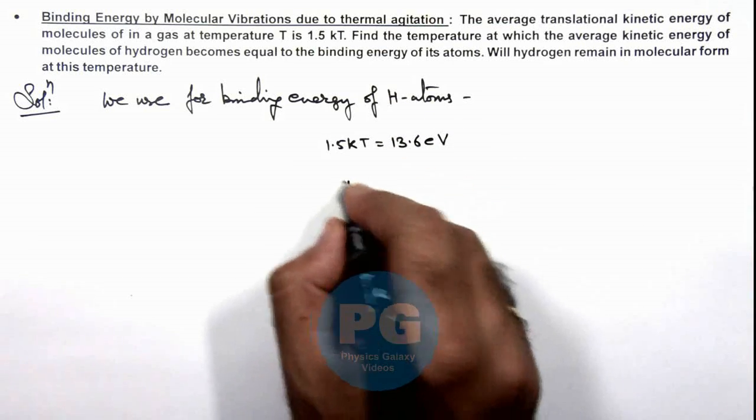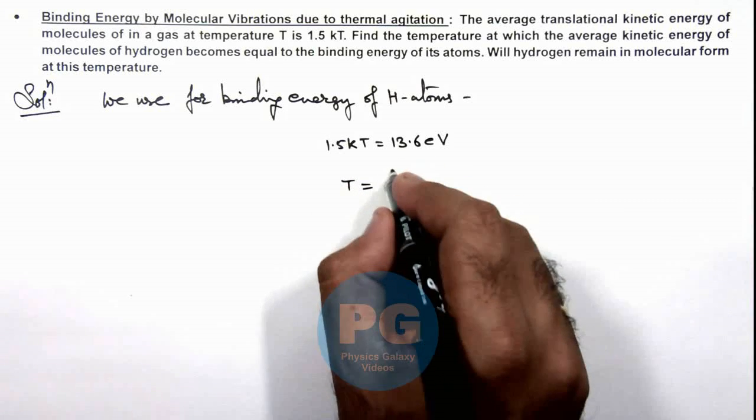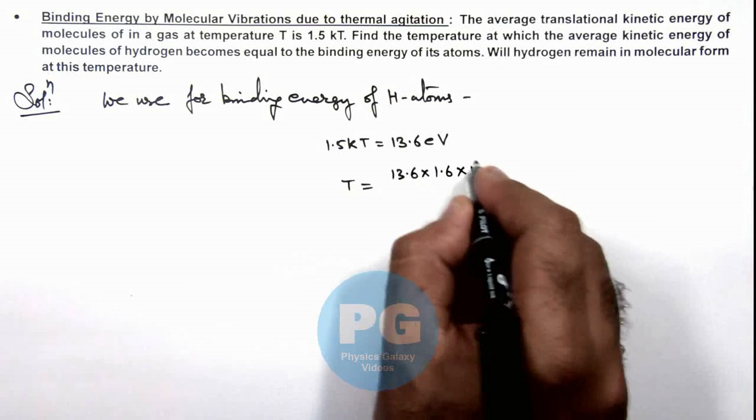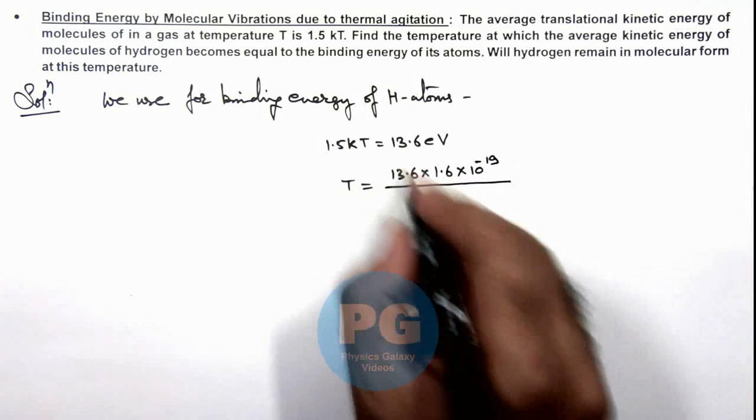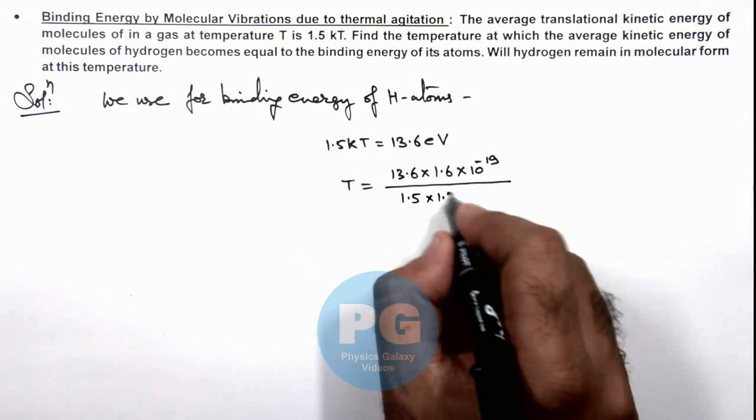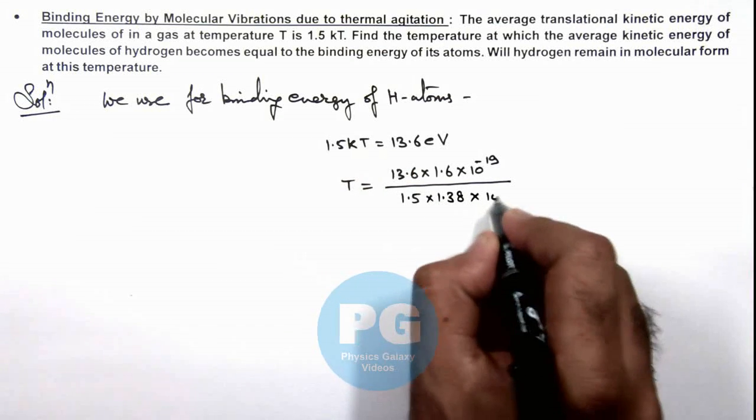And this gives us the value of temperature which is 13.6 multiplied by 1.6 into 10 to power minus 19, divided by 1.5 k, Boltzmann constant is 1.38 into 10 to power minus 23.